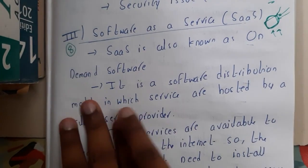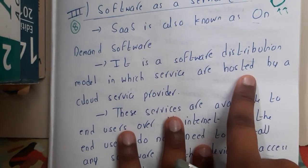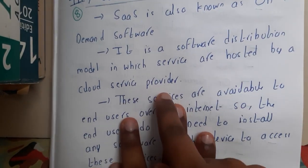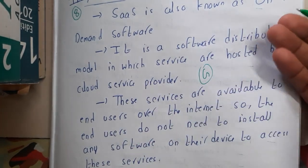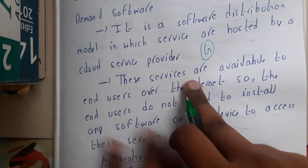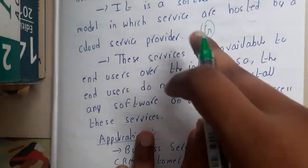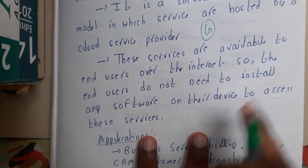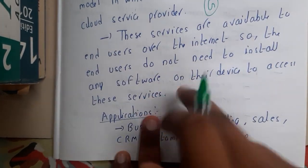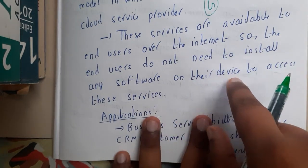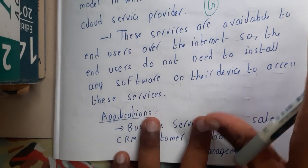SaaS is a software distribution model in which services are hosted by the cloud service provider. It might be Gmail or anything like that. These services are available to end users over the internet, and SaaS is mostly used by end users — we are the customers indirectly. End users do not need to install any software, and there is no device requirement. They can access it from any device with just an internet connection and a browser.